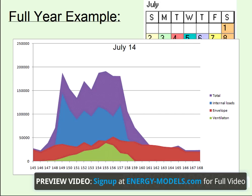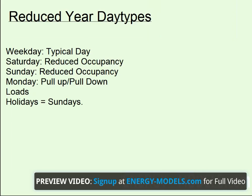In reduced year calculations, there are only a few day types: Weekday, Saturday, Sunday, and Monday. Holidays are treated as Sundays. So the question is, how can we calculate the energy in a 31-day month using only four day types?